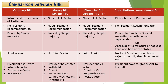Now let us understand the comparison between bills: Ordinary Bill, Money Bill, Financial Bill, and Constitutional Amendment Bill. An Ordinary Bill can be introduced in either house of Parliament. A Money Bill can only be introduced in Lok Sabha. A Financial Bill can also only be introduced in Lok Sabha. A Constitutional Amendment Bill can be introduced in either house. An Ordinary Bill does not require the President's recommendation. A Money Bill requires the President's recommendation, and a Financial Bill also requires it. A Constitutional Amendment Bill does not require the President's recommendation. An Ordinary Bill, Money Bill, and Financial Bill are all passed by simple majority. A Constitutional Amendment Bill is passed by simple or special majority in both houses separately.